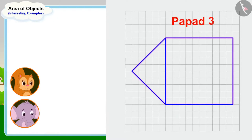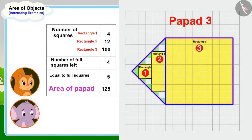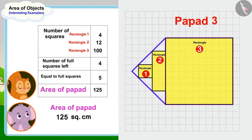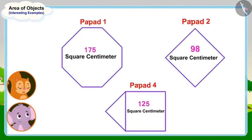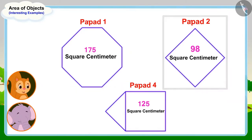Now all we have to do is find the area of this last papar and then we will know which of these papars is the largest, Chanda told Appu. Children, can you help Appu and Chanda by finding the area of this papar? We can find the area of this papar by making rectangles and squares. The area of this papar is 125 square centimeters. Chanda and Appu also found the area of the third papar. The first papar has the largest area, and the second papar has the smallest area, Chanda excitedly told Appu.